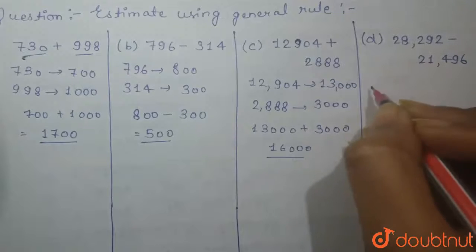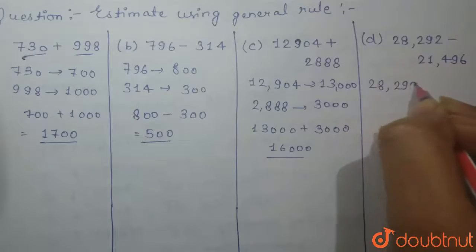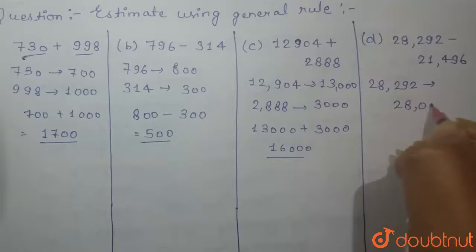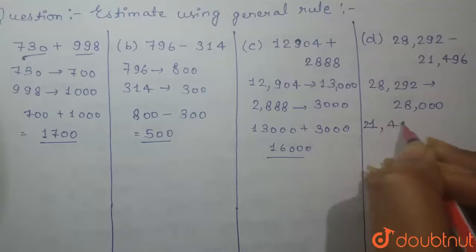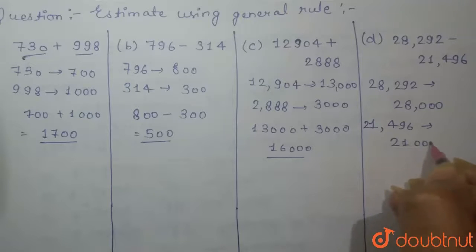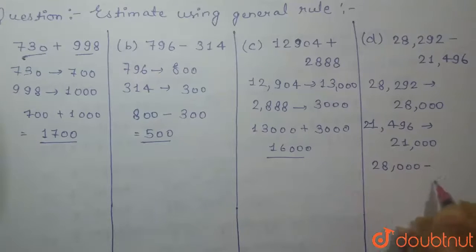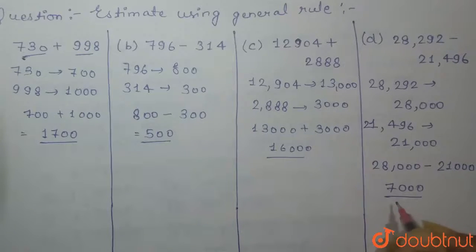And in fourth part, 28,292 will be rounded off to 28,000 and 21,496 will be rounded off to 21,000. Now when we subtract 28,000 minus 21,000, we will get 7,000. This is the required answer.